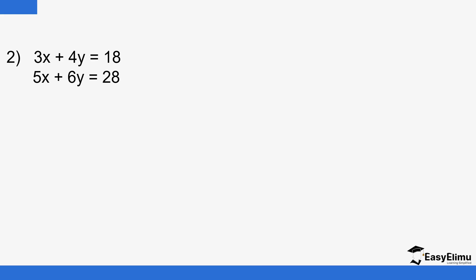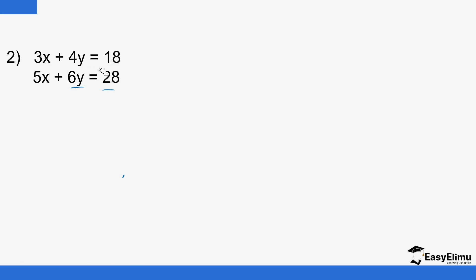Now look at this next example. When it comes to this one, realize it's not easy to eliminate directly — whether you subtract or add, it will not eliminate either variable. So the first thing we do is make the coefficients of either x or y the same in both equations. Rule number one: first arrange them — x, y, then the constant — consistently in both equations. To eliminate x, I'll multiply the first equation by 5 and the second equation by 3, so that we get 15x in both cases.